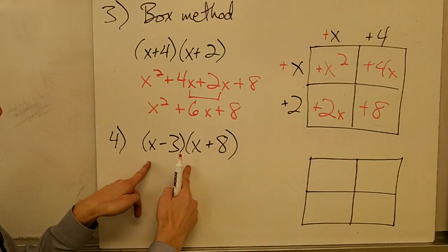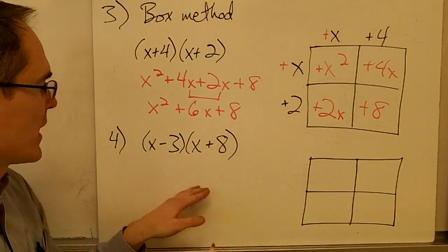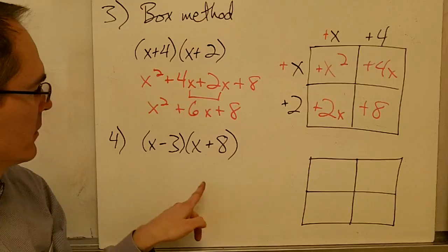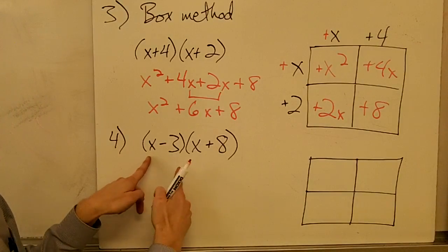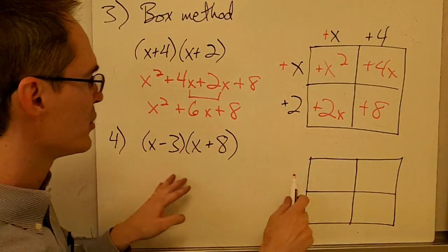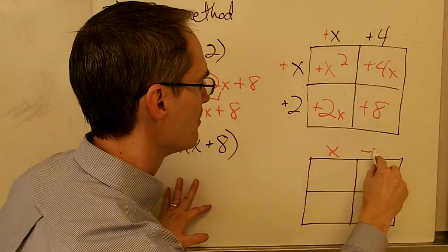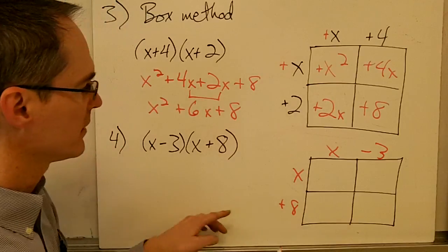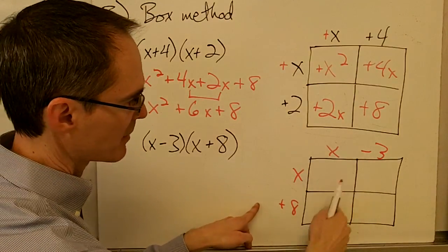So let's do one more example here. Here I've got one where I've got a negative sign, because I want you to see what happens with a negative sign. So I'm going to do this with a box method. I draw my box here, and I'm going to put x minus 3 on top, and x plus 8 on the side. And then I just multiply to fill in my boxes.